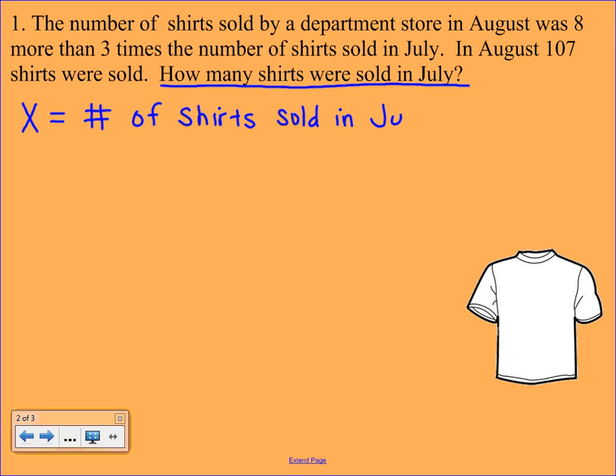The next step is to set up our equation. I'm seeing some numbers here. I'm seeing in August there were 8 more than 3 times the number sold in July. And I'm also seeing that in August there were 107 shirts. So let's circle that 107 because to me that looks like a total. And usually a total is going to go on one side of the equal sign.